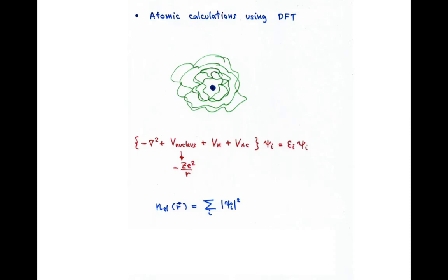But in particular, DFT can also be applied to atoms. In this case, the external potential feature in the theory is just the Coulomb potential of the nucleus.